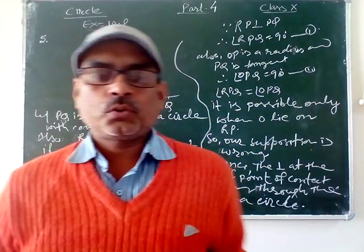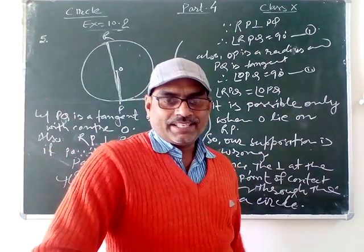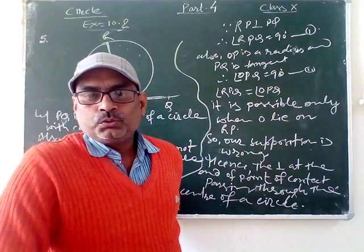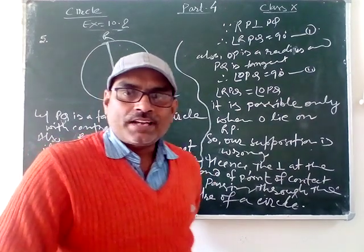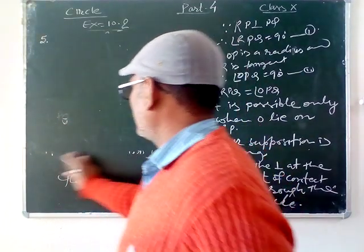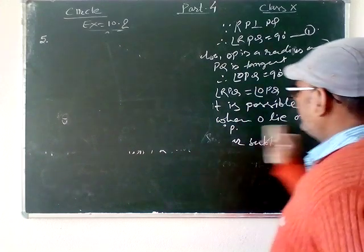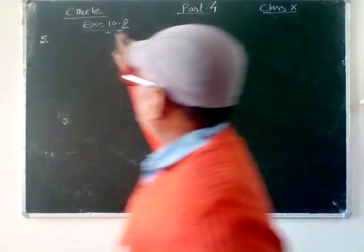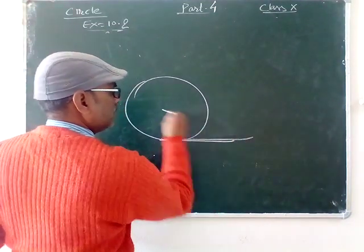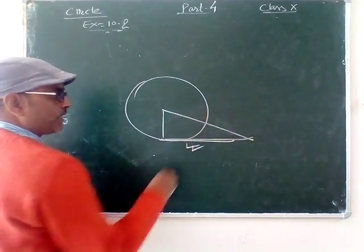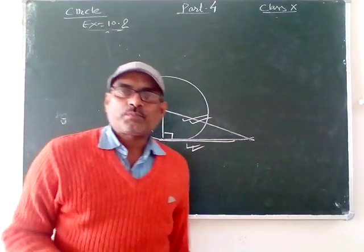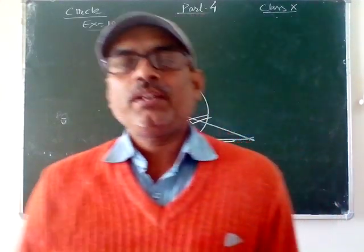Next question. The length of tangent from a point A at a distance 5 cm from the center of a circle is 4 cm. Find the radius of the circle. This is similar to question number 1. Here the length of tangent from an external point and distance are given. Radius can be found by Pythagoras theorem. This is question number 6.